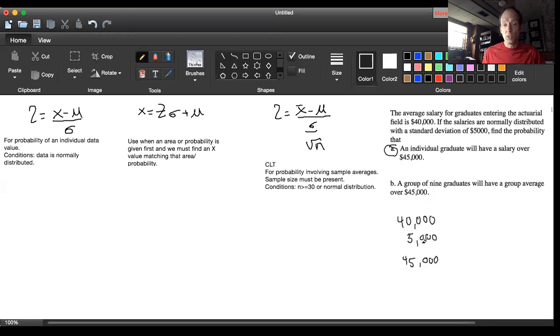To define the symbols, the $40,000 mentioned as the average salary means $40,000 is my population average mu. For part A, there's no information of a sample yet, so it's not X bar. For $5,000, they're talking about standard deviation, so $5,000 equals my sigma.